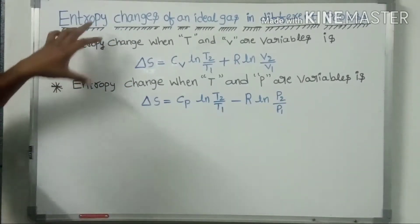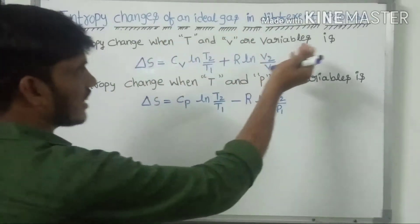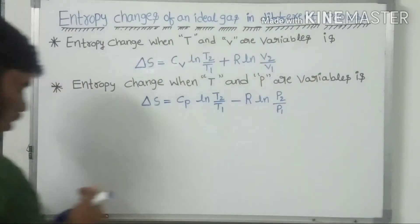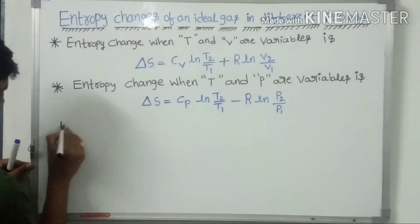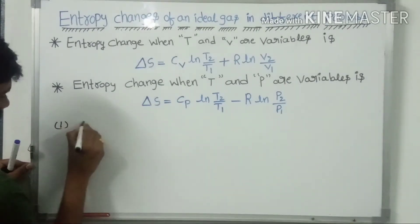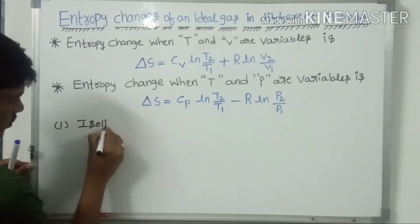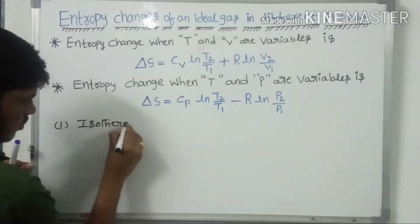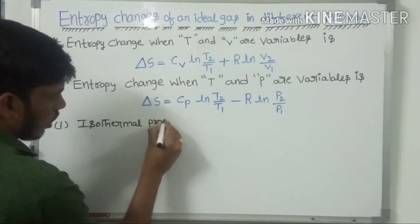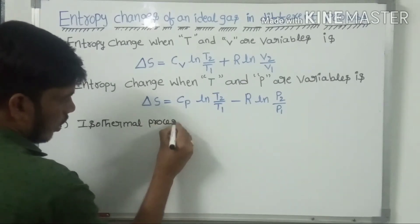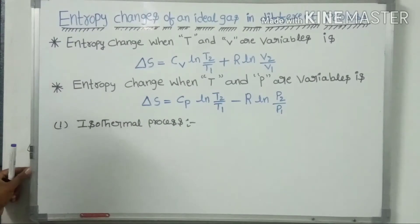Now I will discuss about the entropy changes of an ideal gas in different processes. First one is the isothermal process. Iso means same, thermal means temperature.